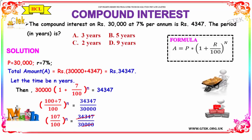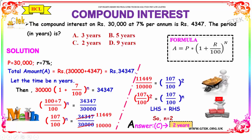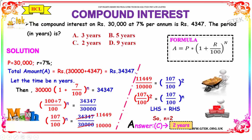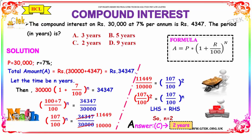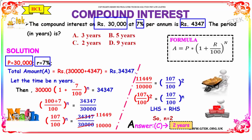Now, let us see some example problems on compound interest. The given problem is: the compound interest on Rs 30,000 at 7% per annum is Rs 4,347. We need to find the period in years. The options given are: option A is 3 years, option B is 5 years, option C is 2 years, and option D is 9 years. From the given question, the principal P is Rs 30,000, the rate of interest r is 7%, and the interest amount is Rs 4,347.